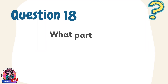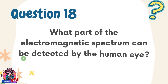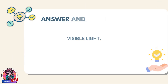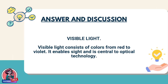Question 18. What part of the electromagnetic spectrum can be detected by the human eye? Answer: visible light. Visible light consists of colors from red to violet. It enables sight and is central to optical technology.